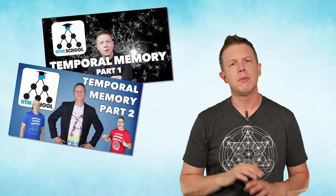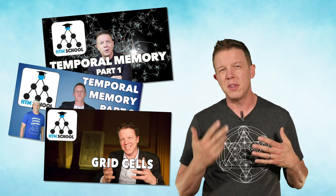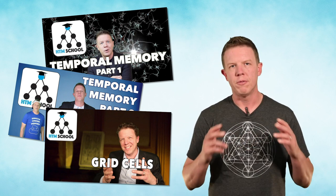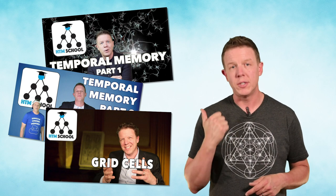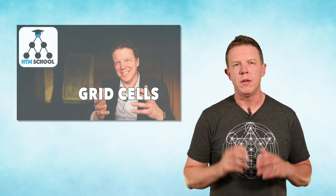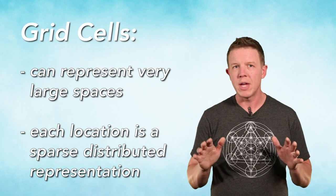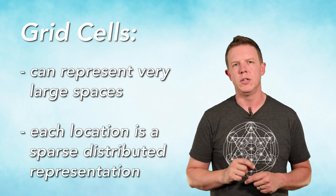This episode builds upon ideas presented in previous shows. It's okay if you don't completely understand the temporal memory algorithm, but you really need to understand a few important things about grid cells. First of all, if you haven't seen it, watch this. It explains everything you need to know about grid cells for this episode. If you get grid cells, you should understand that grid cells can represent an enormous amount of space, and each location in space is a sparse distributed representation.